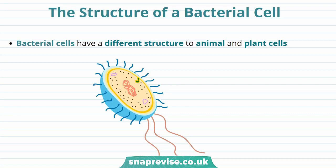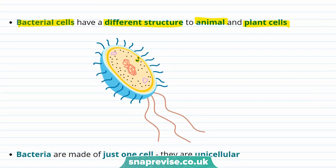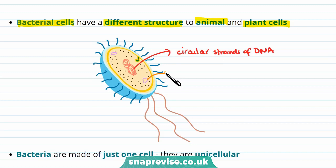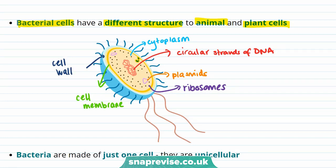Bacterial cells have a different structure to animal and plant cells. This is because, unlike animal and plant cells, bacteria are prokaryotes — so they don't have a nucleus, but they have circular strands of DNA in the cytoplasm. They also have plasmids, a cytoplasm, ribosomes (though these are a bit different to those found in animal and plant cells), a cell membrane and a cell wall (though the cell wall is made of something different to what's found in plant cells). They also have some additional structures.